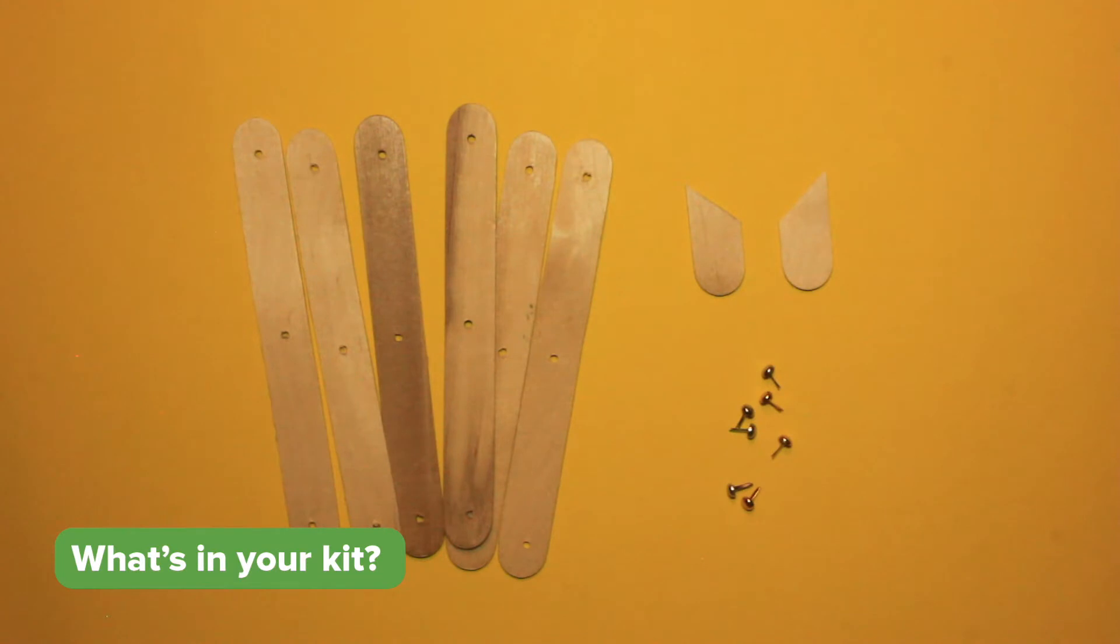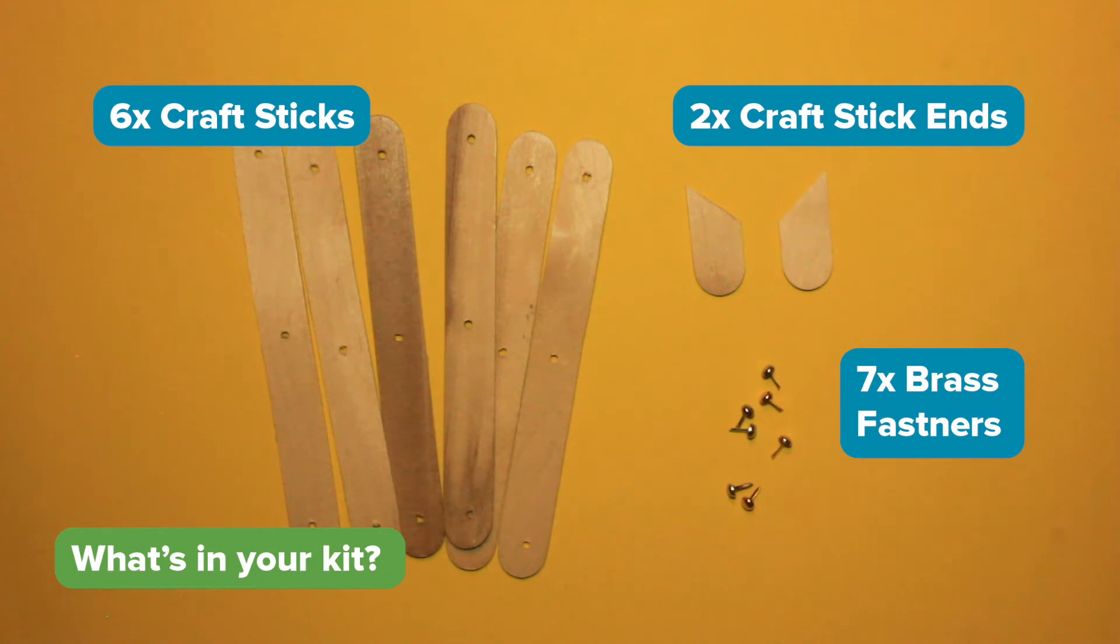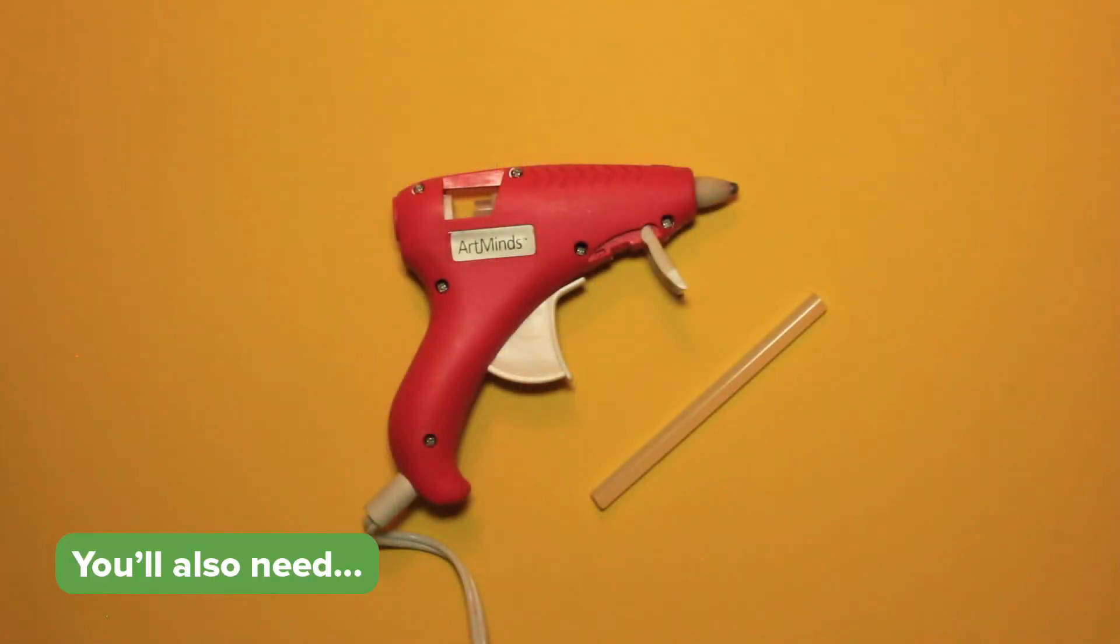First, let's take a look at what's in our kit. Six craft sticks, two craft stick ends, and seven brass fasteners. You'll also need glue. A hot glue gun works great, but you can also use regular glue.